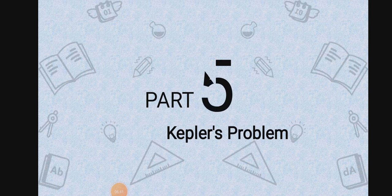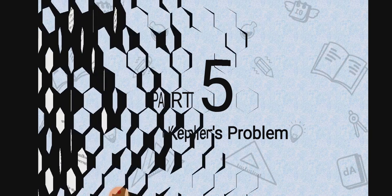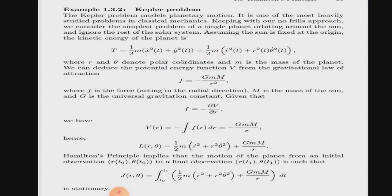Bismillahir Rahmanir Rahim, I am Muhammad Munawar and I am presenting an example based on Kepler problem. What is Kepler problem? It is one of the most heavily studied problems in classical mechanics. We consider the simplest problem of a single planet orbiting around the sun and ignore the rest of the solar system. We suppose that the sun is fixed at the origin. Then kinetic energy of the planet is given by T equals one half m into x dot squared plus y dot squared, because kinetic energy is equal to one half m v squared, and after solving it we will get that equation.